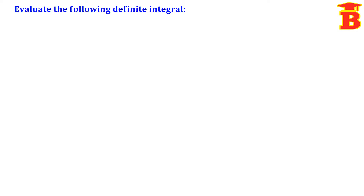Next problem: evaluate the following definite integral — the integral from 0 to π/2 of root of cos θ into sin cubed θ dθ. Here we take cos θ as u, because the differentiation of cos θ is minus sin θ dθ, and we have sin θ dθ available. Since we have sin cubed θ, we arrange it as sin squared θ into sin θ.